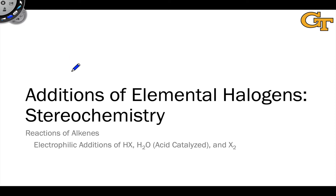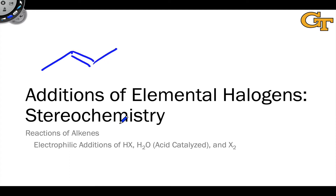In this video, we're going to study the stereochemistry of the additions of elemental halogens to alkenes. In particular, we're going to look at two contrasting cases: the case of addition of X2 to trans-2-butene, which is this molecule here, and the addition to cis-2-butene, which is this molecule here.